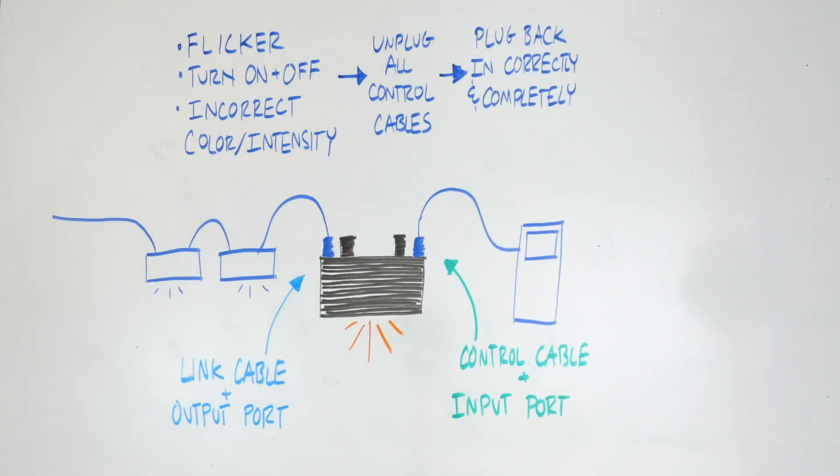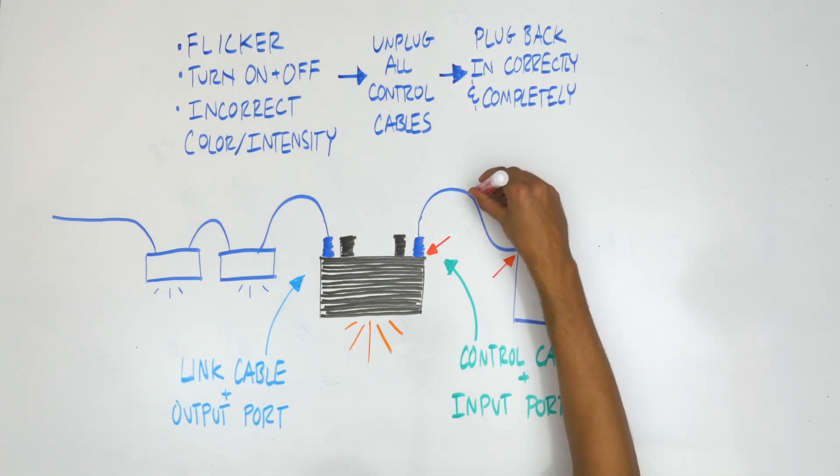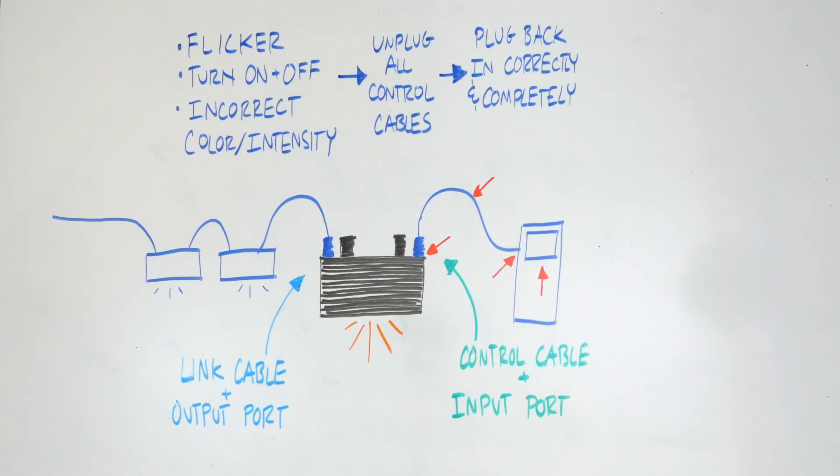If the light continues to experience symptoms after taking these steps, then the reason may lie with one of the following four areas. The external control port on the light, the port on the controller, the controller settings, or the cable. You can substitute each of these parts individually and test the light to determine the cause. If you are unable to do this, please contact your local Kessel distributor for further assistance.